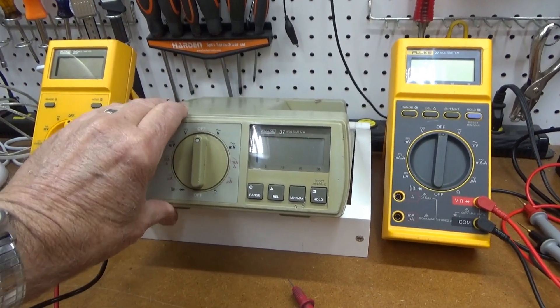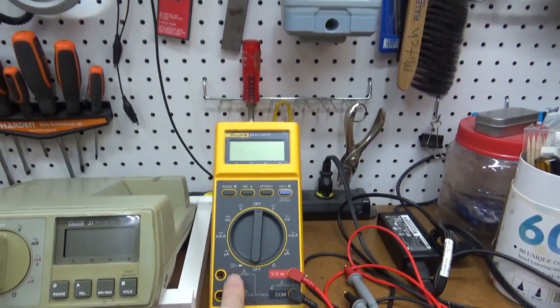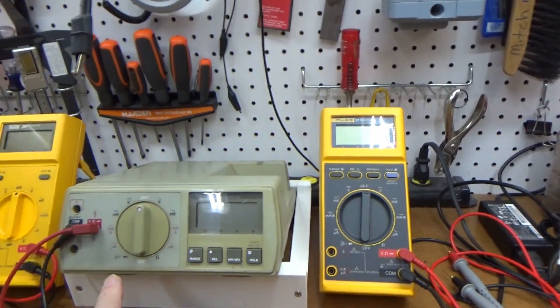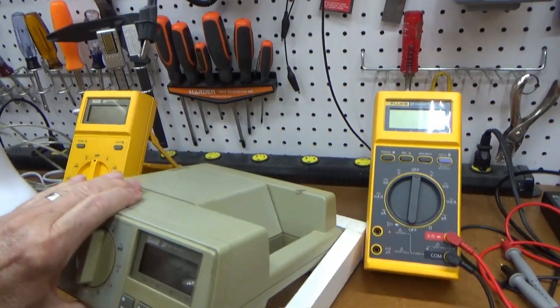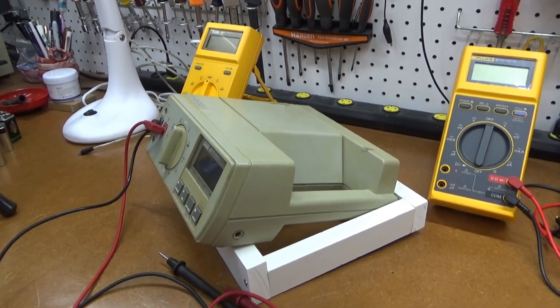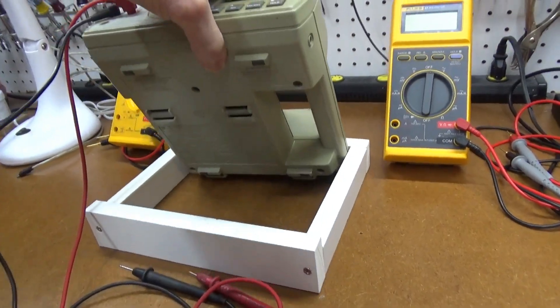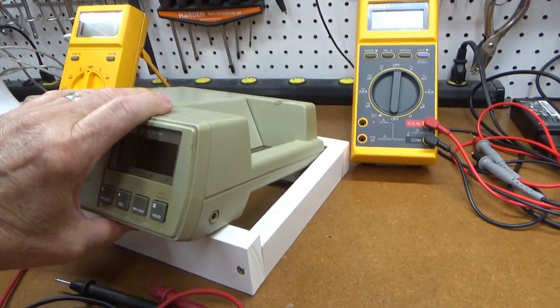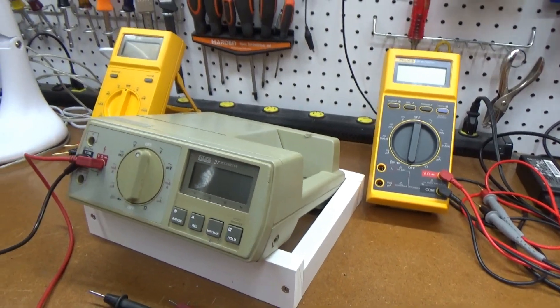So this is the Fluke 37. It's really just one of these Fluke 27 repackaged into a desktop package. It didn't come with the tilt bail which connects down there, so I just made my own out of wood so it's angled up properly.